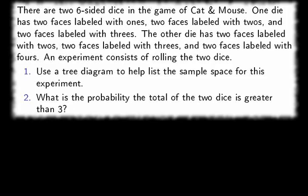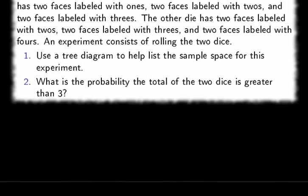An experiment consists of rolling the two dice. Number one, use a tree diagram to help list the sample space for this experiment. A tree diagram is appropriate here because this is an experiment that naturally can be decomposed into two stages.